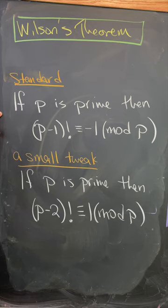First, the classic way. If p is prime, then p minus 1 factorial is congruent to minus 1 mod p.